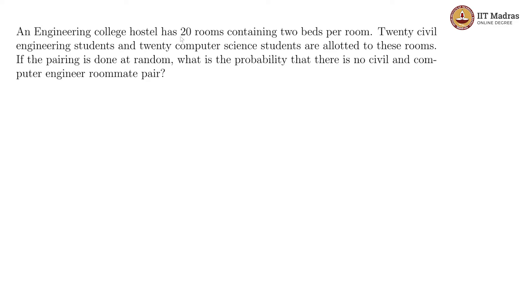An engineering college hostel has 20 rooms and 2 beds per room. There are 20 civil engineering students, 20 computer science students who are allotted to these rooms. Pairing is done at random. What is the probability that there is no civil and computer engineer roommate pair?